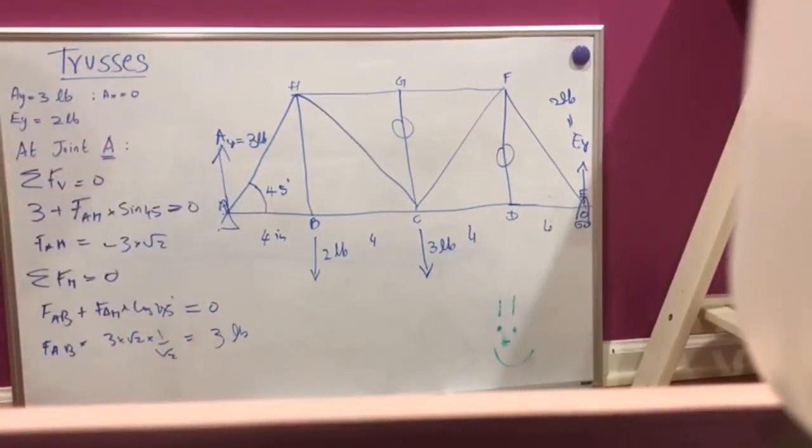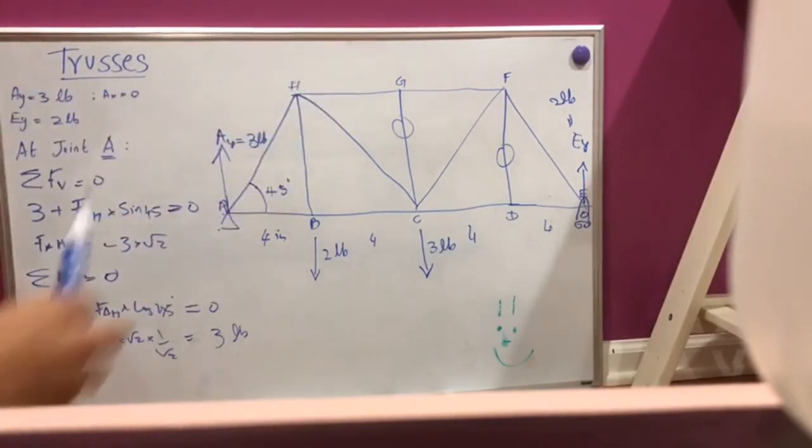We can do this whole procedure by taking the horizontal forces to be zero, the vertical forces to be zero. We can do this procedure for all joints and find out the forces in each segment.